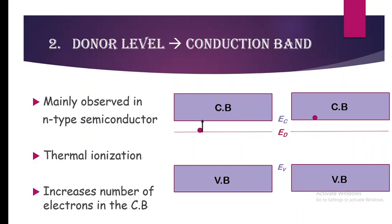We use one electron at a time so that understanding is easier. This transition from the donor level to the conduction band increases the number of electrons in the conduction band, where electrons are free to move and contribute to electrical conductivity. This is the second type of transition.